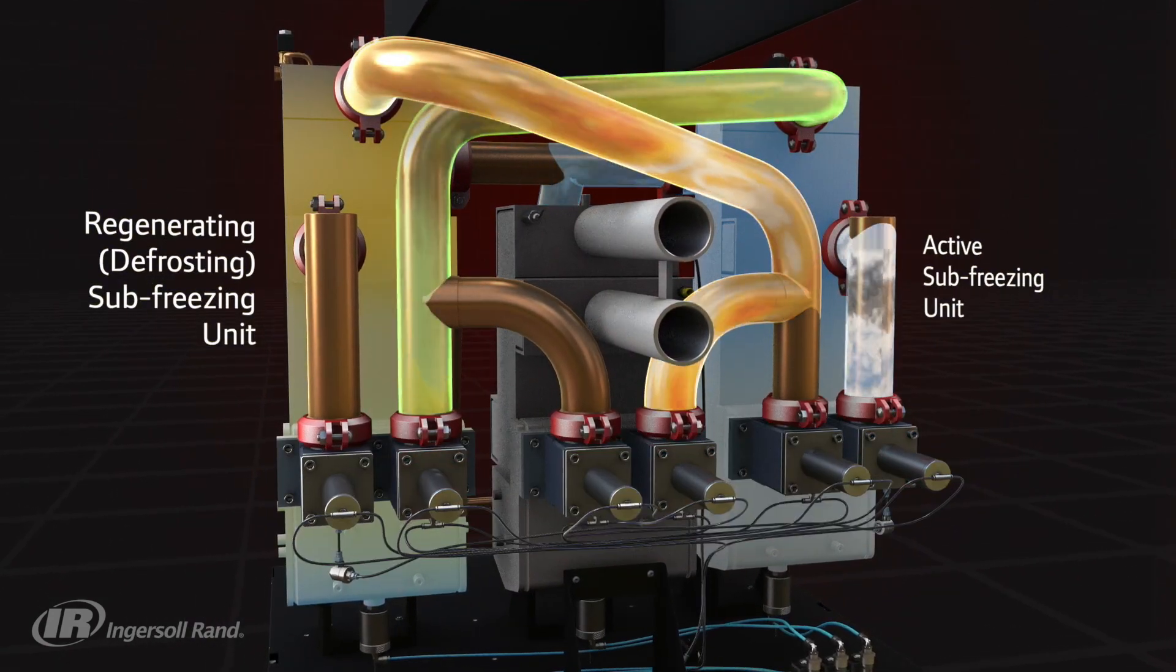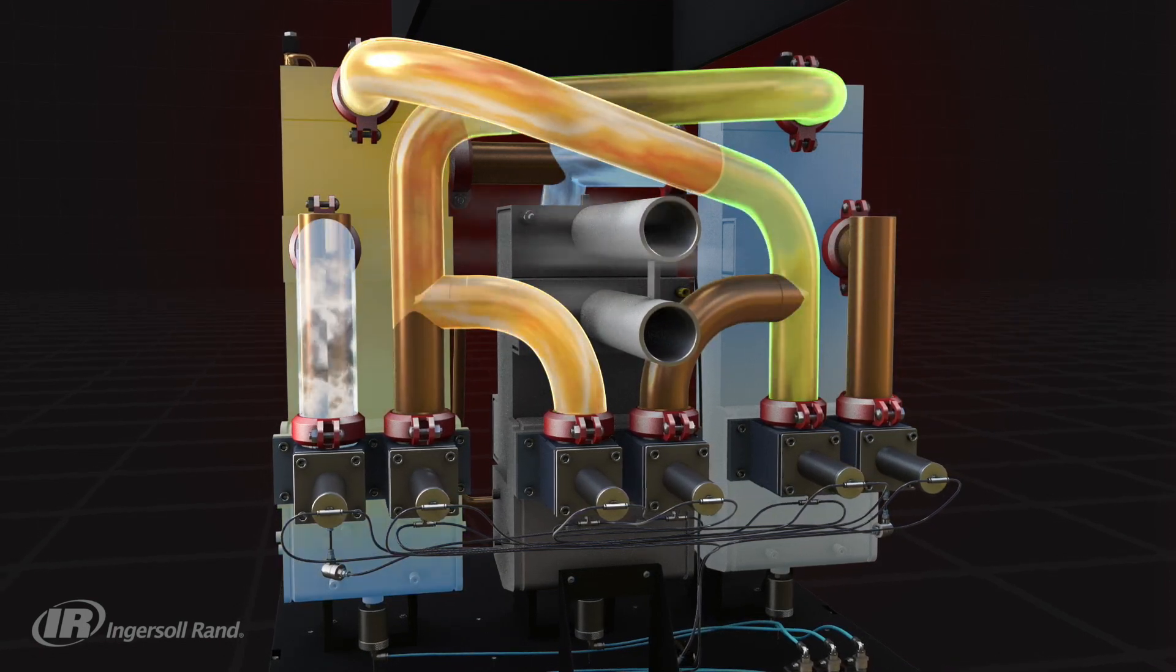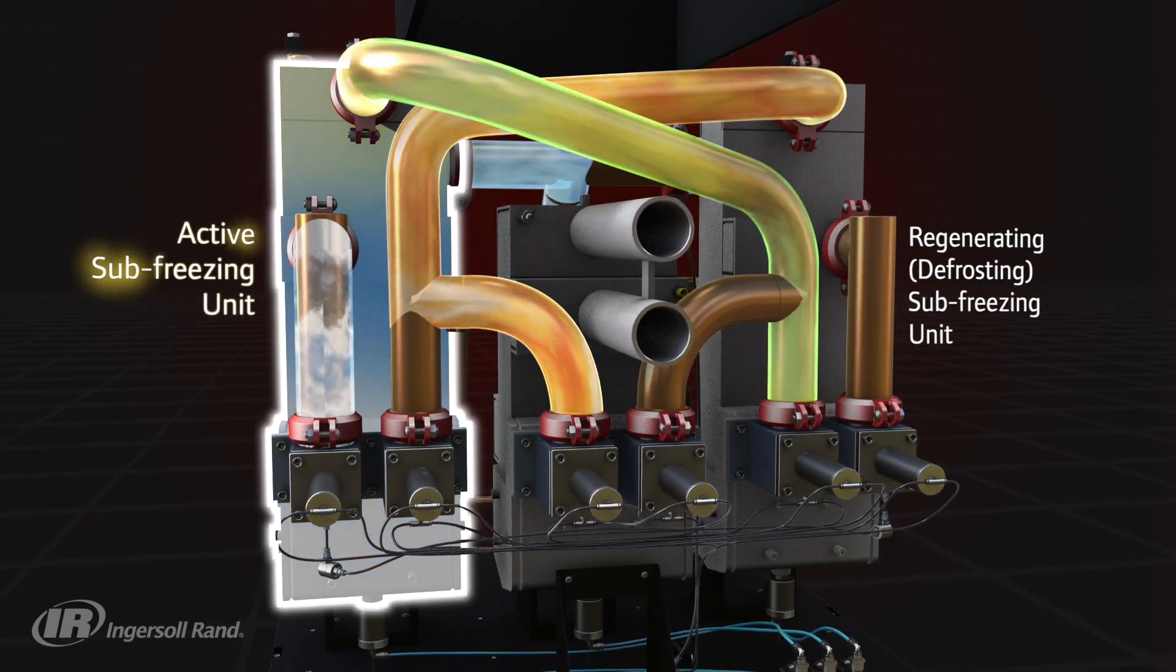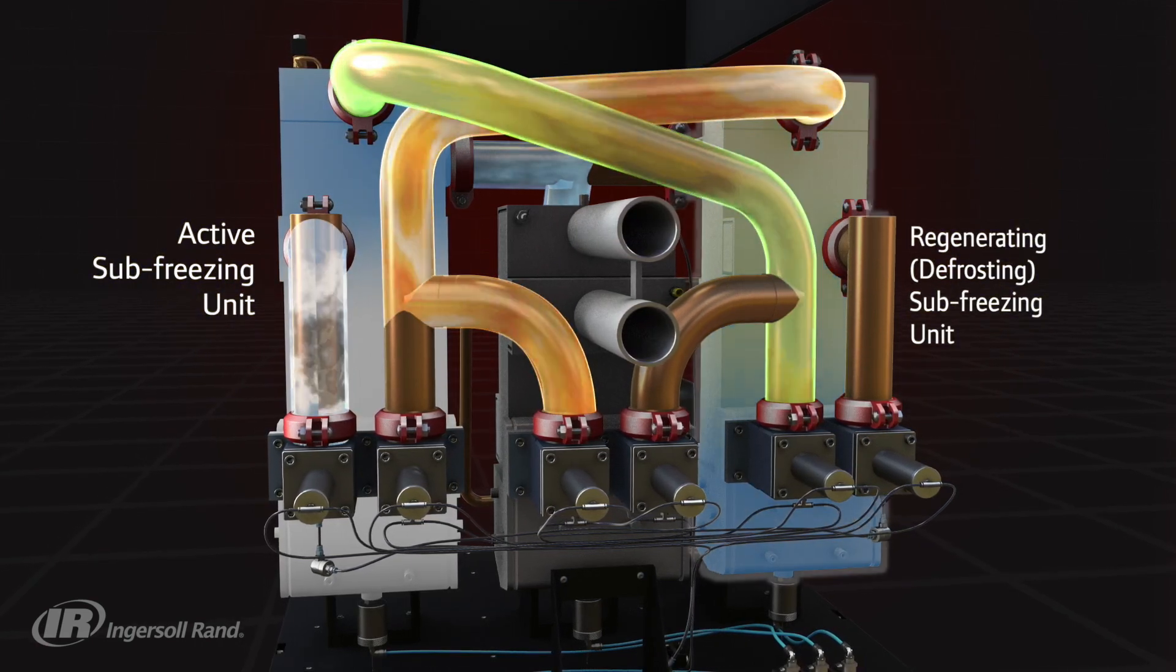By opening and closing a series of valves, the controller re-routes the main airflow and refrigerant to the second unit, now making this the active unit and putting the frosted unit into its regenerative phase.